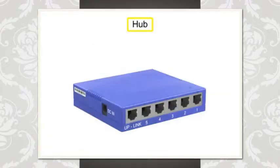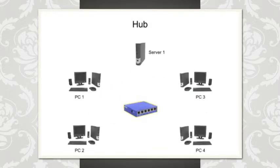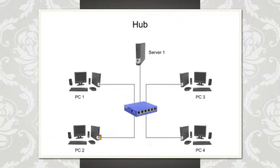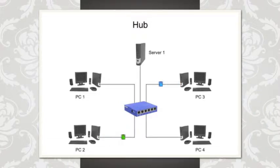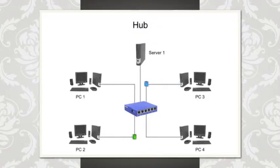A hub is a centralized connecting device, often located at the center of a star network, that automatically rebroadcasts any signal or data it receives from one device to all other devices on the network. Because all devices connected to a hub are competing for media usage, collisions can occur when two devices send transmissions simultaneously. For this reason, it's important to avoid using a hub for messaging that requires immediate response.